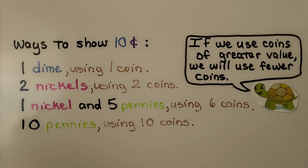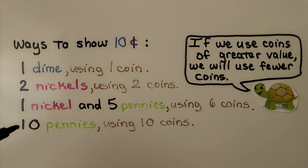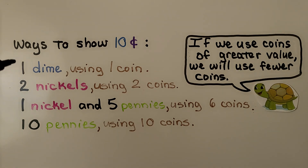If we use coins of greater value, we will use fewer coins. Pennies are only one cent in value, so we have to use 10 of them. But a dime is 10 cents, so we only need one.